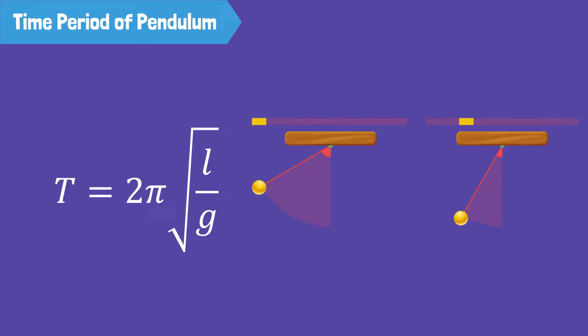Let's look at another example. Which of these two pendulums will have a greater time period? Again, look at the formula. We can see that the displacement between the mean and extreme positions or amplitude does not have any effect on the time period. Therefore, both these pendulums will have the same time period.